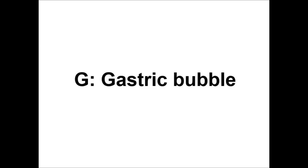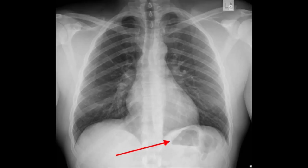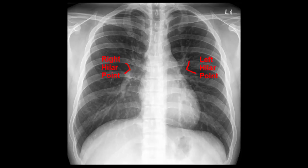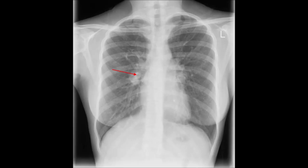G is the gastric bubble. A normal gastric bubble is a small dark area under the diaphragm with a fluid level. If the patient has a hiatus hernia, you may see the gastric bubble above the diaphragm. H is the hyla. Normally only the pulmonary blood vessels are visible around the hyla, so visible lymph nodes are an abnormal finding. Look around here also for masses and calcified areas. This x-ray shows a patient with hyla lymphadenopathy secondary to tuberculosis.